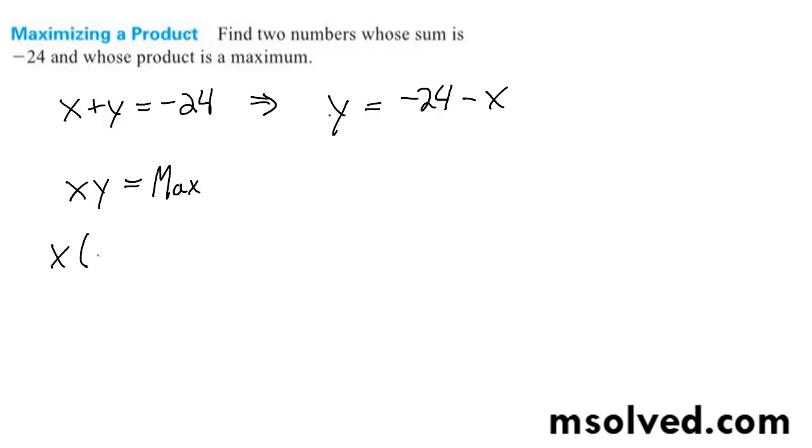So for x times negative x minus 24 is equal to m. We get negative x squared minus 24x equals m.